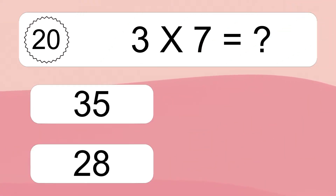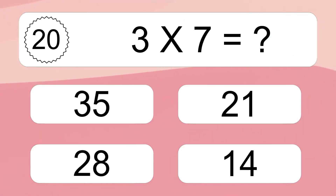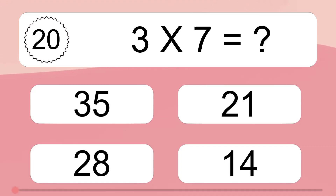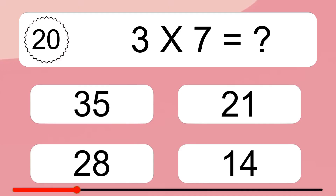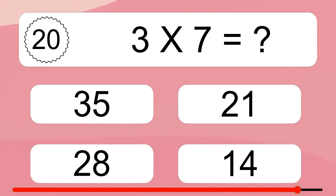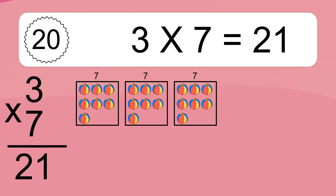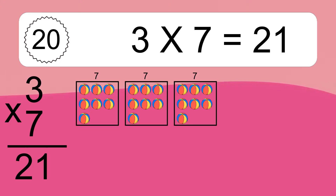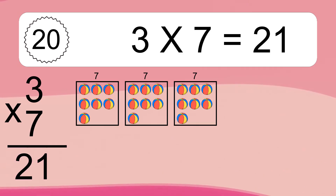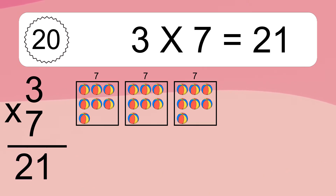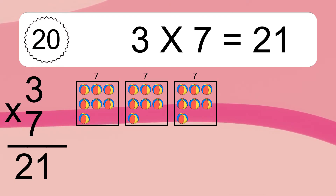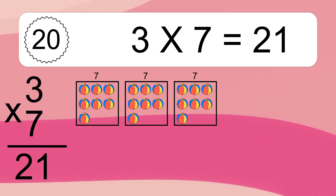3 times 7 equals what? 3 times 7 equals 21. If you count all the balls in all the boxes together, you will have 3 times 7 balls. This equals 21 balls.